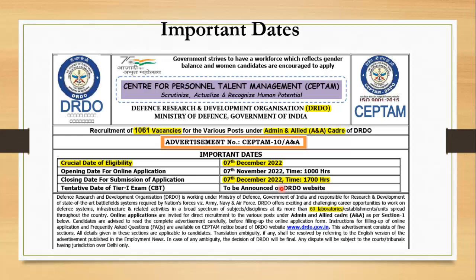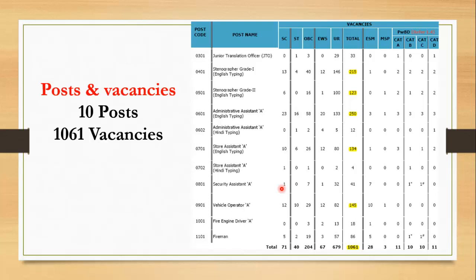In the advertisement there are 10 posts and 1061 vacancies. As you can see in the table: Junior Translation Officer has 33 posts; Steno Grade 1 English typing has 215 vacancies; Steno Grade 2 has 123; Admin Assistant A has 250 vacancies; Store Assistant has 134 vacancies. There are also other posts like Security Assistant, Vehicle Operator, Fire Engine Driver, and Fireman.